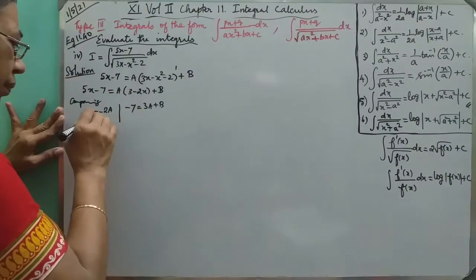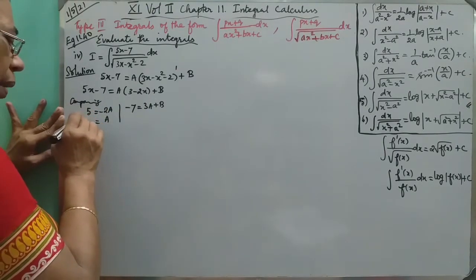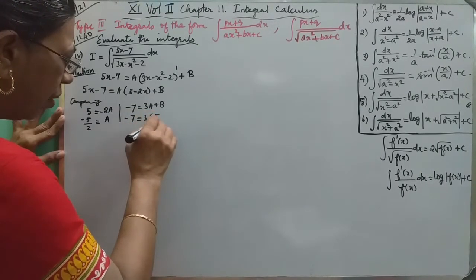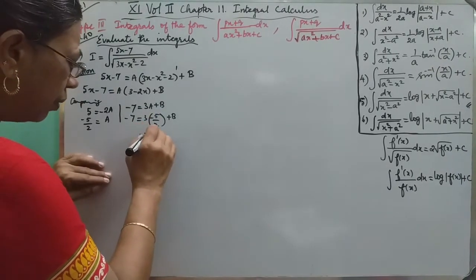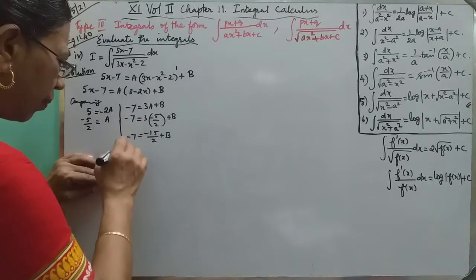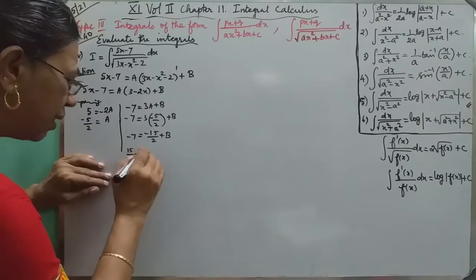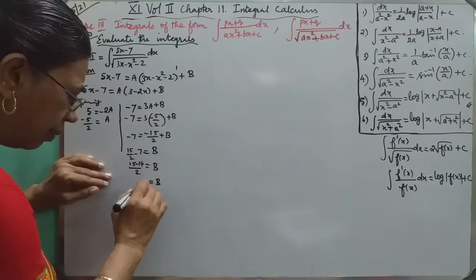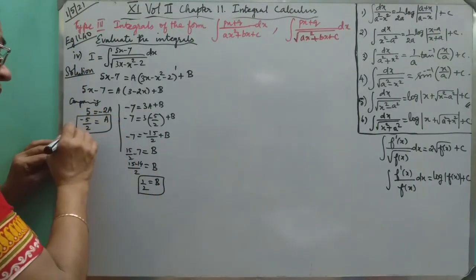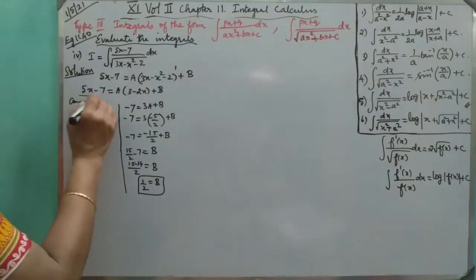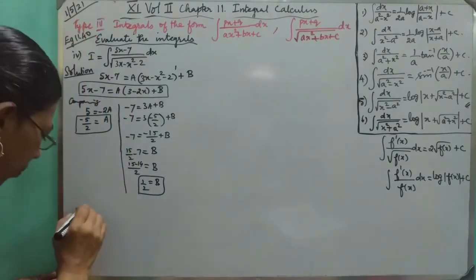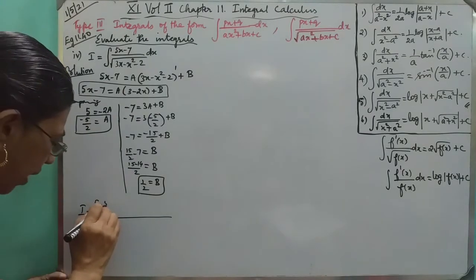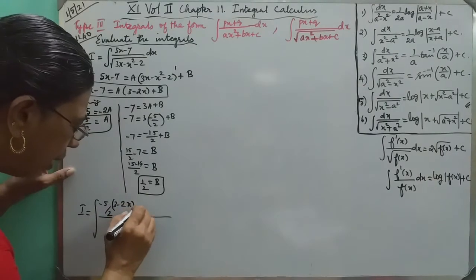We get 3 minus 2x plus b. The answer: a is equal to minus 2, and b is minus 1. So a is minus 5 by 2, giving us minus 5 by 2 into 3 minus 2x plus b, where b is minus 1 by 2.